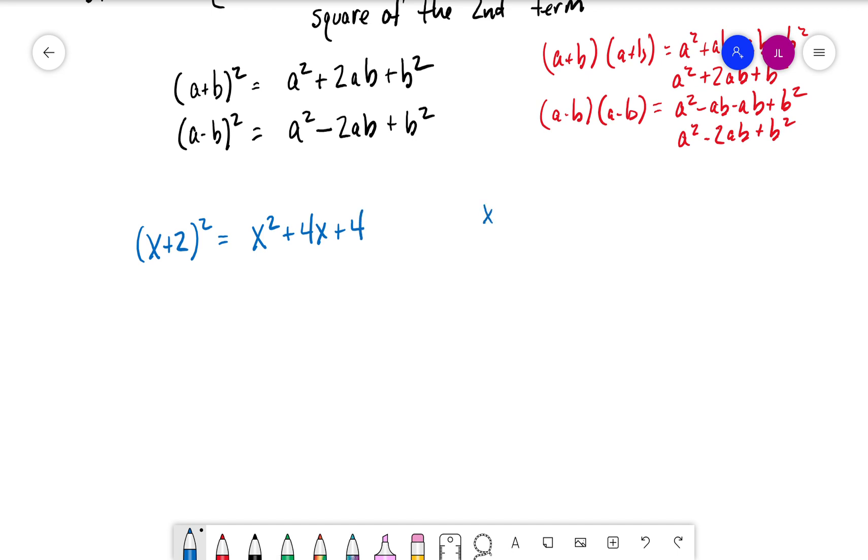Now if we work it out, x times x is x², plus 2x by multiplying the inner terms, then the outer ones gives us plus 2x, plus 4. So x² + 4x + 4. We can shortcut this just by knowing the special products we're talking about.